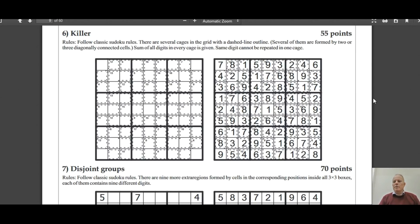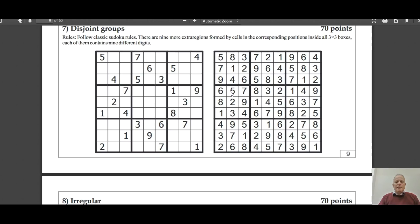This one is called Disjoint Groups. The extra constraint here is that in every top left corner, for instance of a box, you get the nine different digits again from one to nine. And the same is true for every position of square. So all the middle squares will be the different digits from one to nine. That's quite a hard constraint to work. You kind of have to picture a different extra region for every cell position. That's not easy. We're getting up to the higher value puzzles in this round.